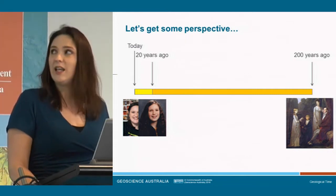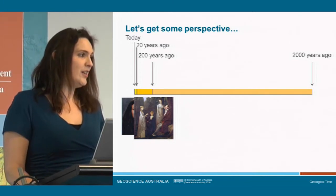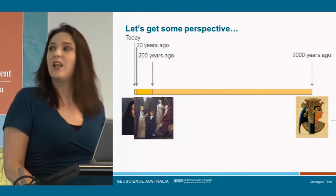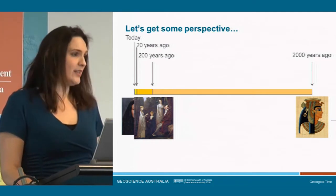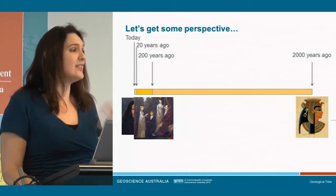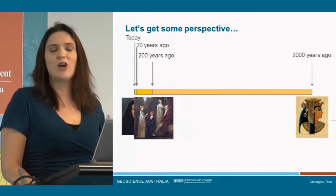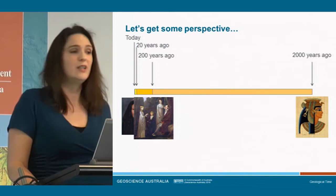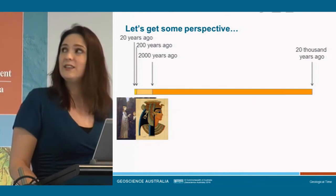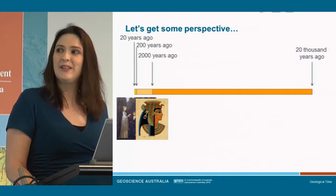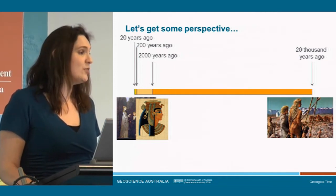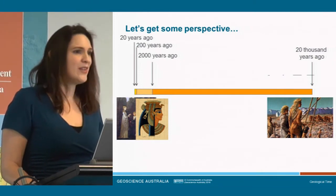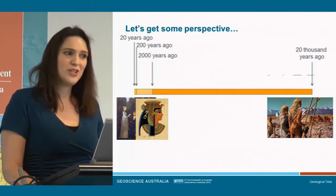Multiply by 10 again and we're talking about 2,000 years ago — ancient Egypt, ancient Greece, Cleopatra and Julius Caesar. That's starting to get harder to comprehend, but you can still manage it. Multiply by 10 again: 20,000 years ago, the ice ages, cavemen, hunters and gatherers. A very different world, and 20,000 years is a bit harder to appreciate.